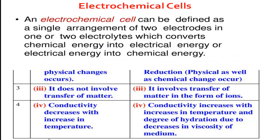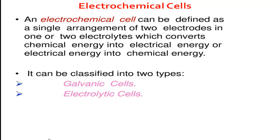Now, my dear students, we will know about the electrochemical cell. An electrochemical cell can be defined as a single arrangement of two electrodes in one or two electrolytes which converts chemical energy into electrical energy, or electrical energy into chemical energy. We will know more detail about this electrochemical cell in next classes; today I just want to introduce it.